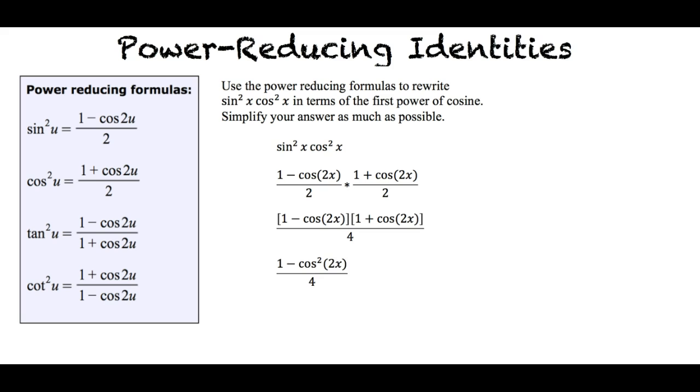Then we multiply the numerator. We will separate the fraction. What should we do next? Use the power reducing formula for cosine.